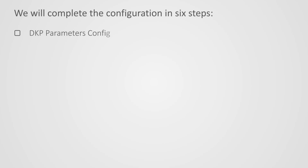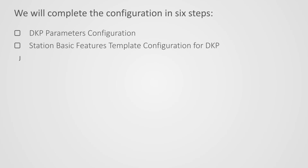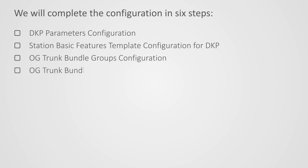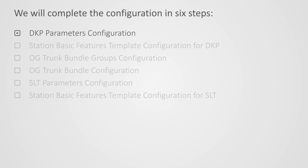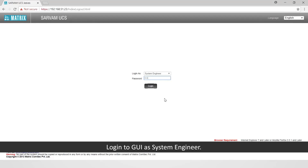We will complete the configuration in six steps: DKP parameters configuration, station basic features template configuration for DKP, outgoing trunk bundle groups configuration, outgoing trunk bundle configuration, SLT parameters configuration, and station basic features template configuration for SLT. Let us start with the first step — login to the GUI as system engineer.